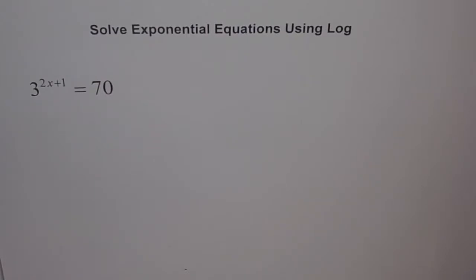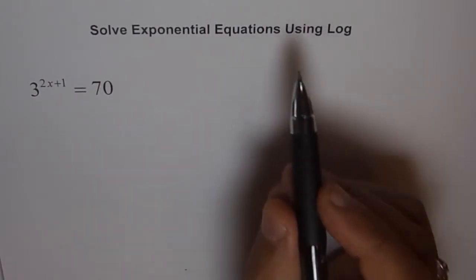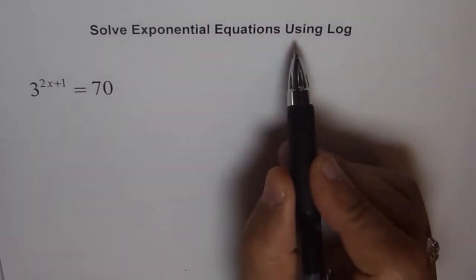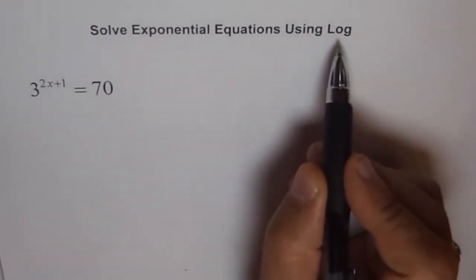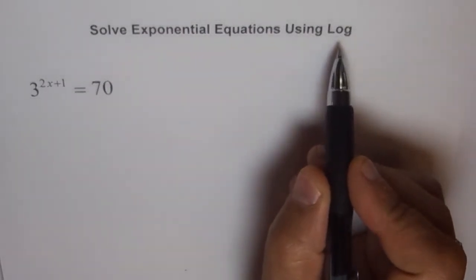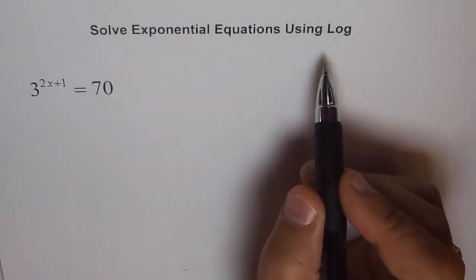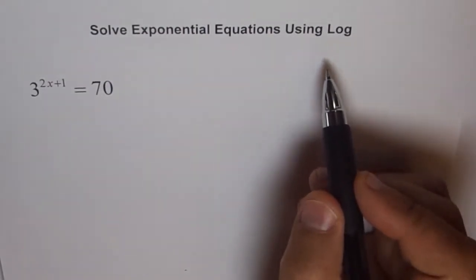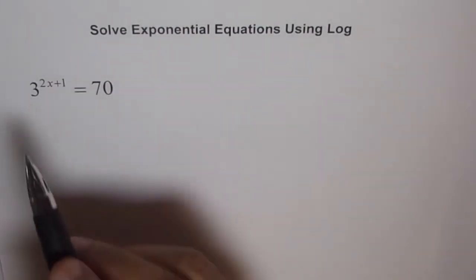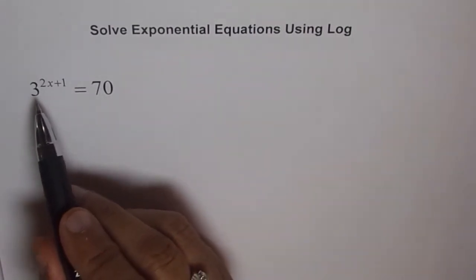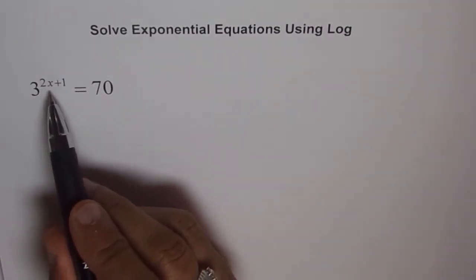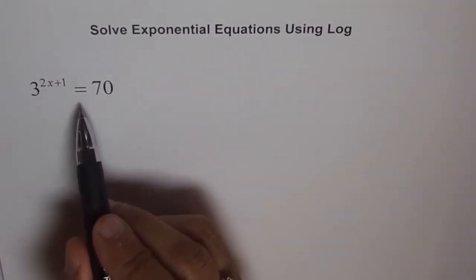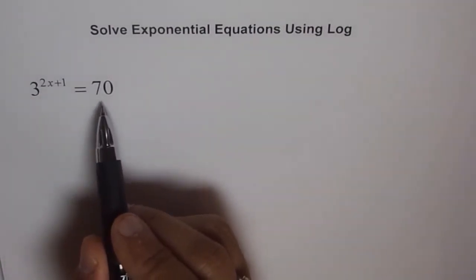We're going to solve exponential equations using log. Here is a problem: 3 to the power of 2x plus 1 is equal to 70.